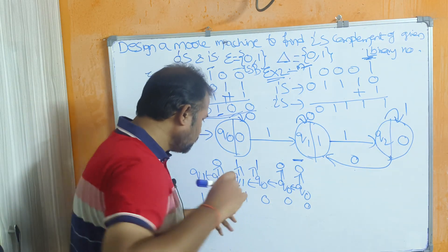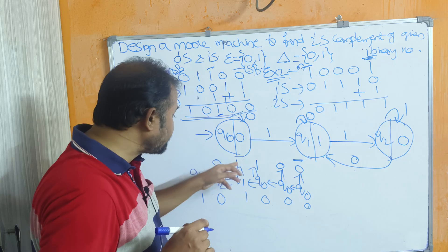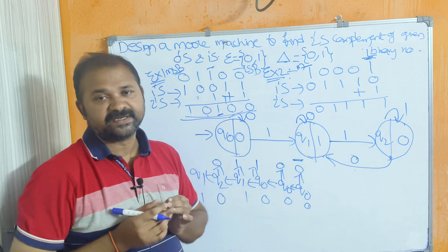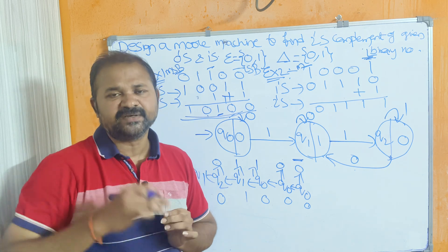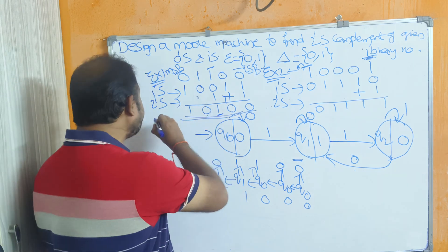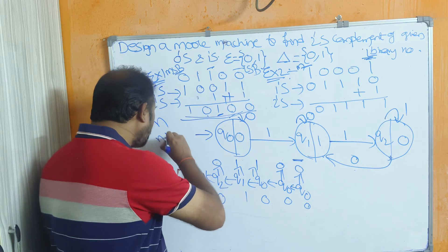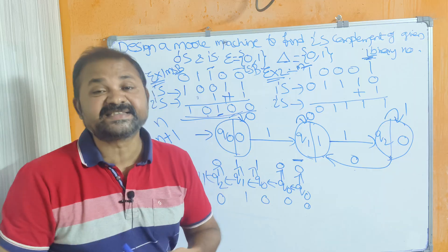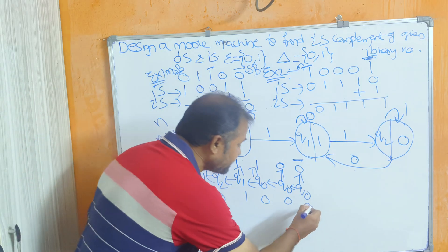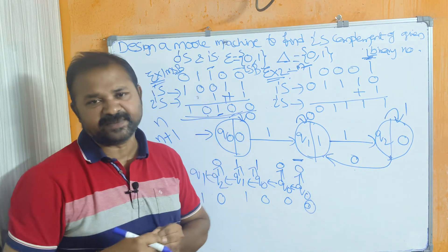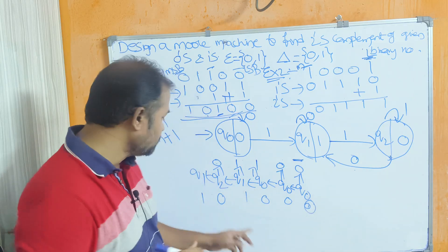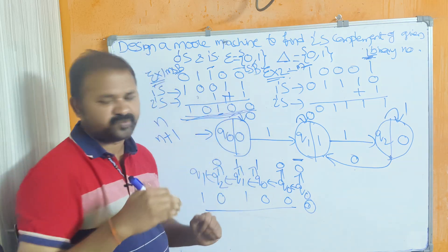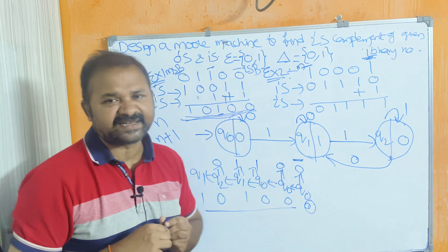The input string size is 5 bits, but the output string size is 6 bits. In a Moore machine, if the input string size is n, the output string size is n+1. We can neglect the least significant bit of the output. So the final output is 1 0 1 0 0, confirming our diagram is correct.